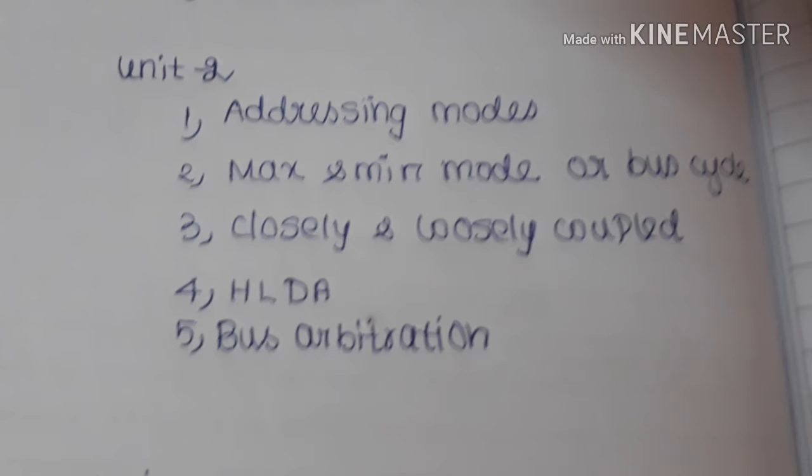Unit 2. The first important question is maximum and minimum mode, bus cycle or timing diagram. That is very important. Then, closely and loosely coupled - differences, maybe 8 marks.